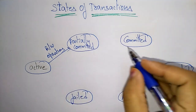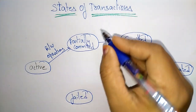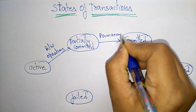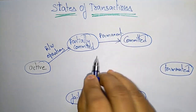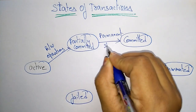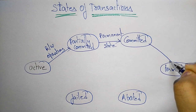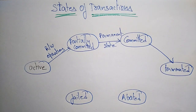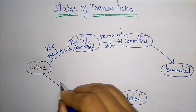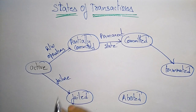The read and write operations occur while the state is going from active to partially committed. If the state is partially committed, and everything is fine in the transaction, you have to make it a permanent state by sending it to the committed state. After committed, the program will be terminated.